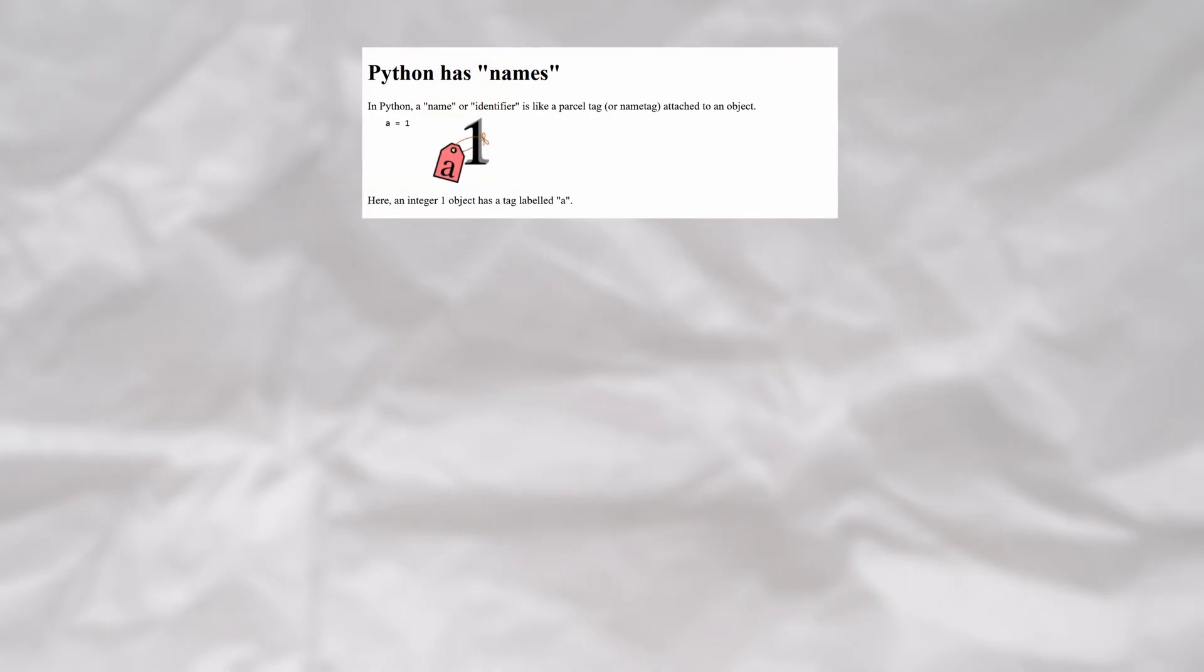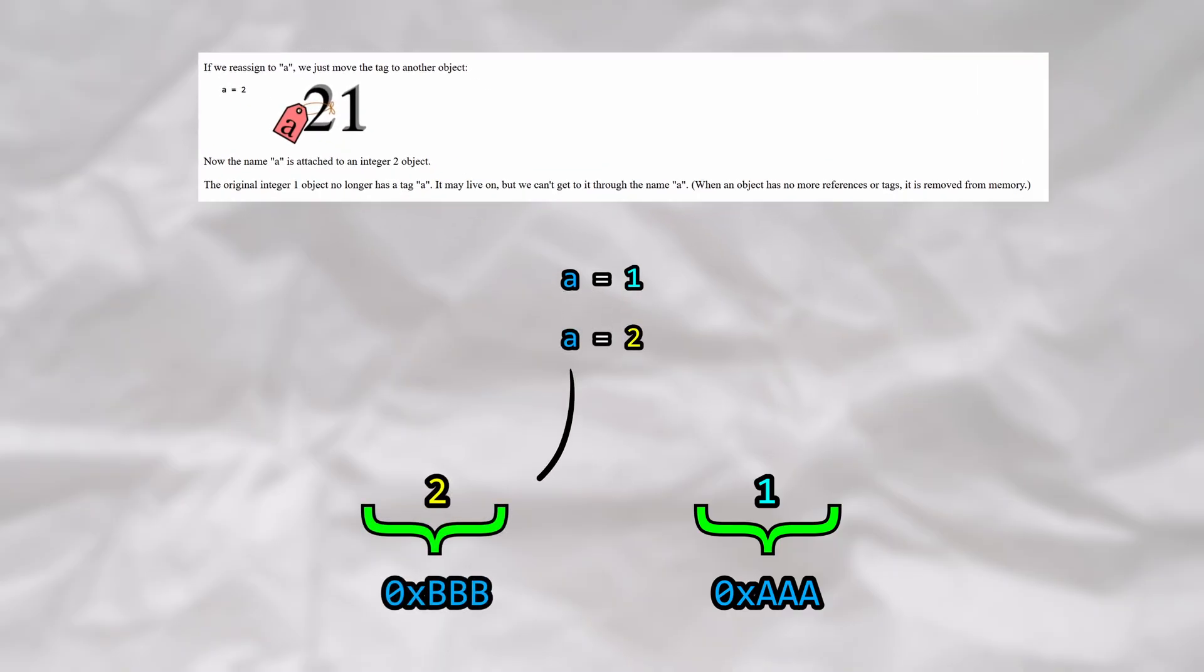In Python, let's assign the integer 1 to a variable a. This means that the variable a will point to a memory location containing the integer 1. Now, if we reassign the variable a to an integer 2, this time, the variable a will actually end up pointing to an entirely new memory address that contains the integer 2.